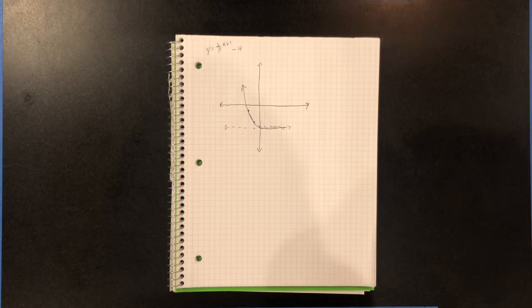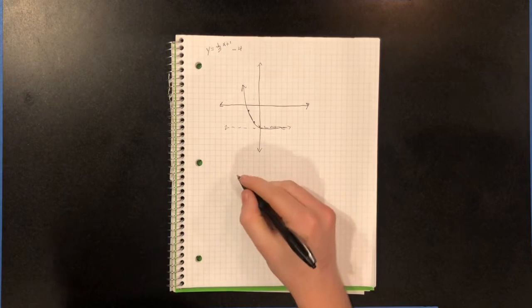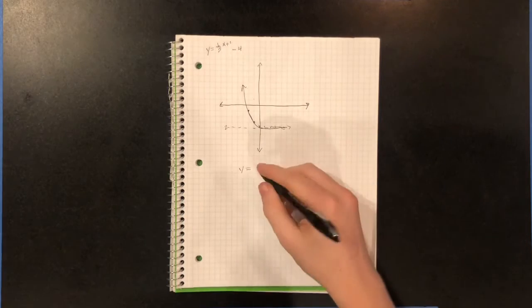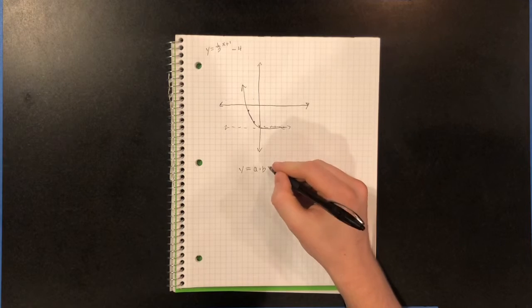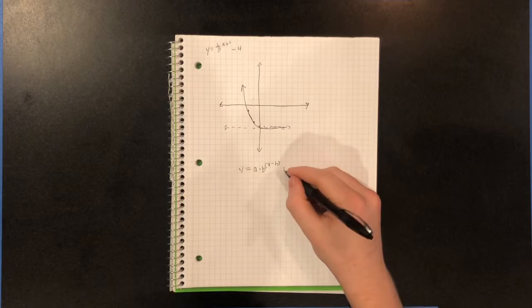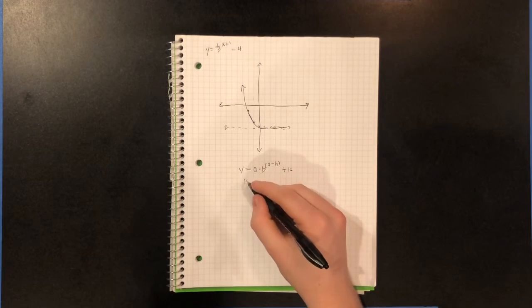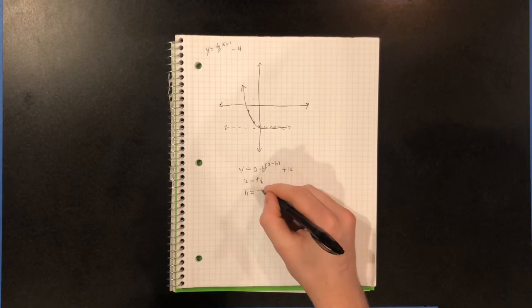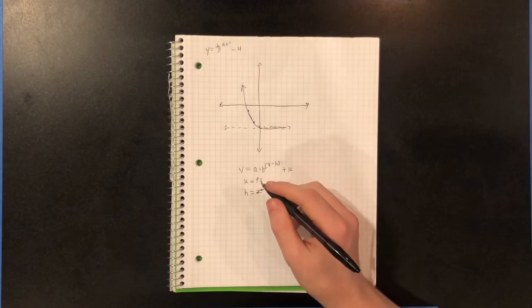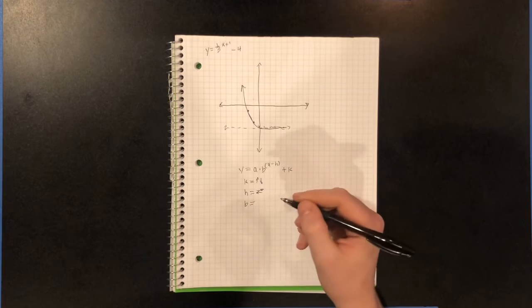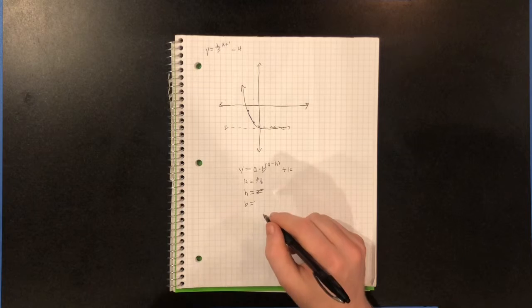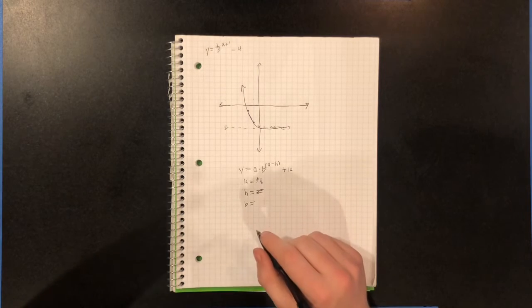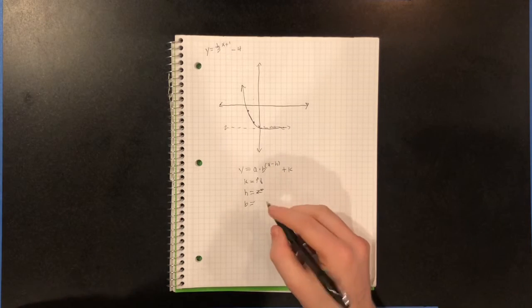This has been, wait. So in review, we have learned that our plain standard general equation is y equals a times b to the x minus h plus k. And k is, it's up and down, it's the up and downers. h is right and left. And then b is like the curve. It's like how curvy or not curvy it is, how steep or not it is. And then so it's like steep or not. And then the a does similar to b. It's just another b.